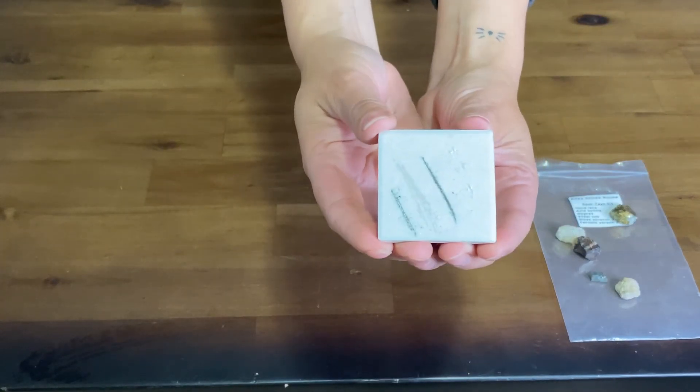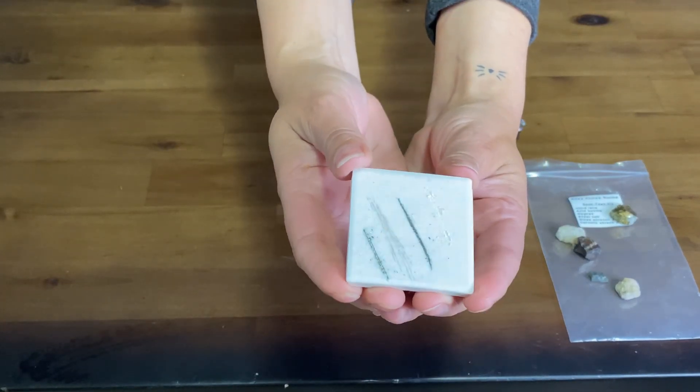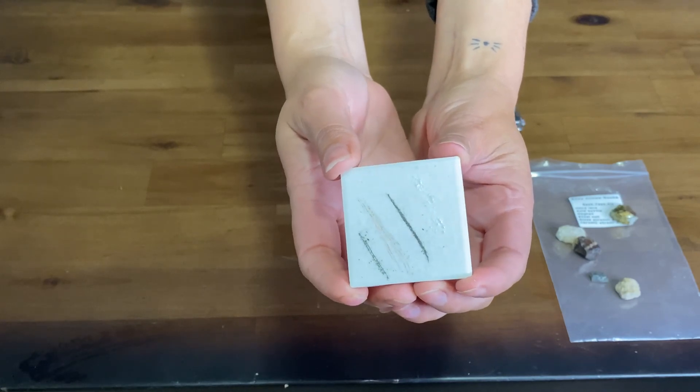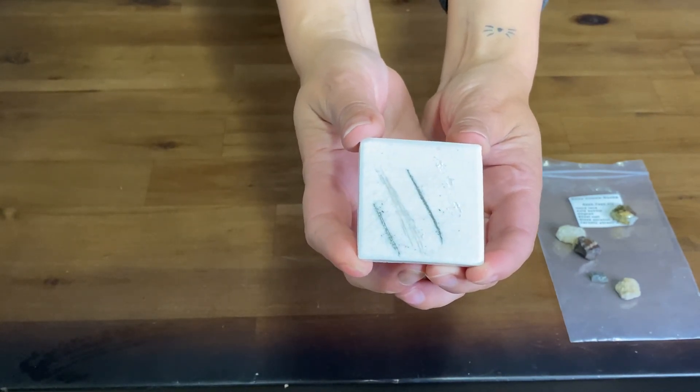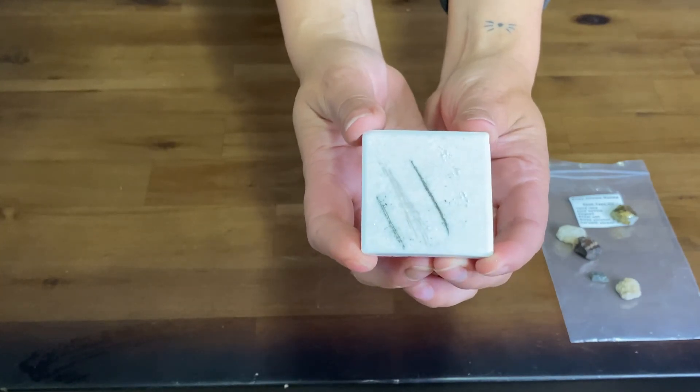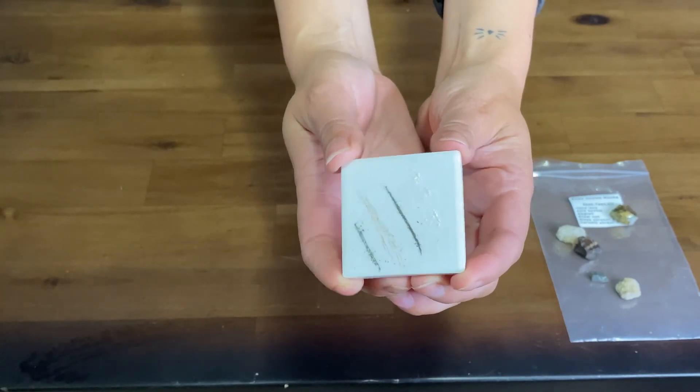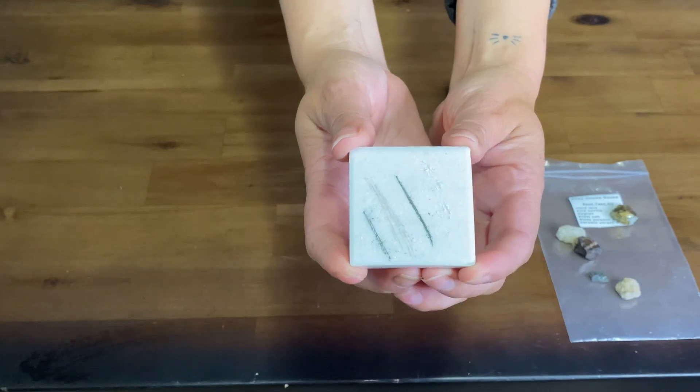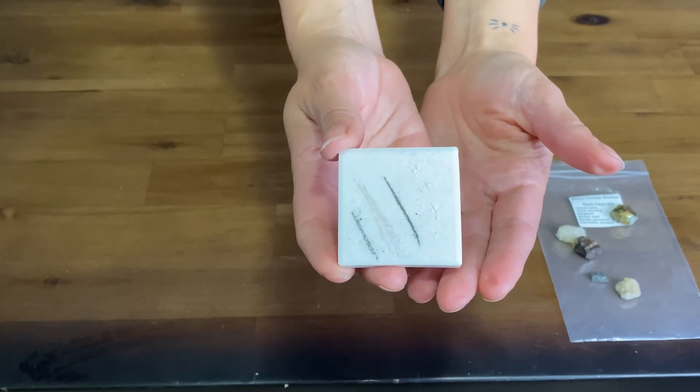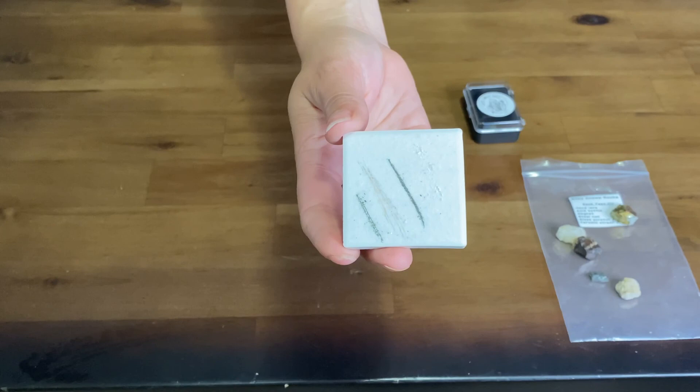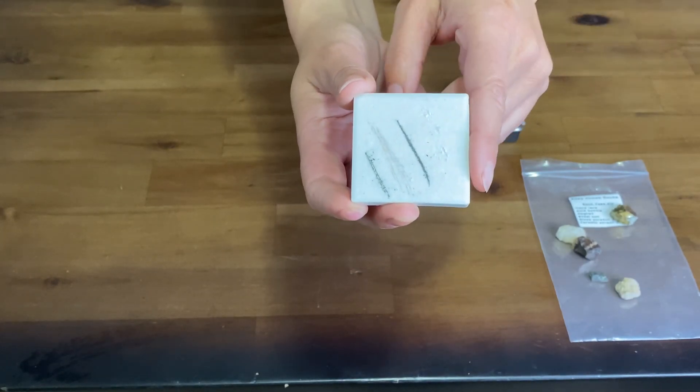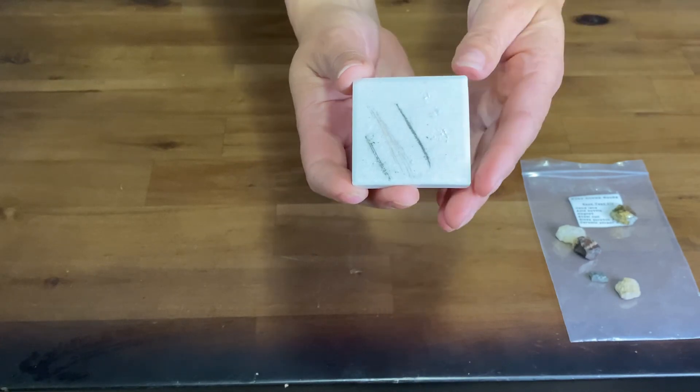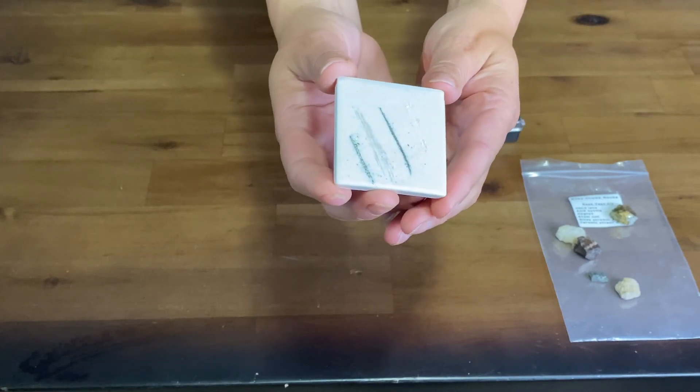See how each mineral has its own individual streak color? This is the mineral in its powdered form and its most purest form for you to see what color the mineral actually is. Sometimes minerals reflect and refract light causing them to look a different color than they truly are. Scratching it on a streak plate will actually help you see the mineral's true streak color and help you identify that mineral later.